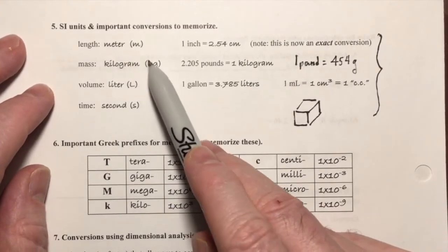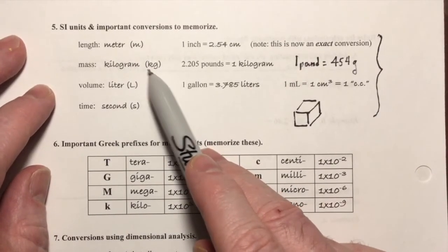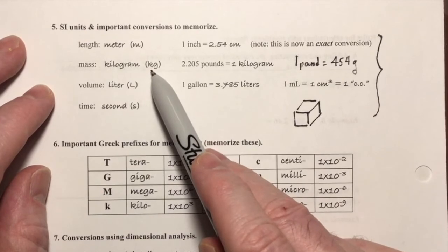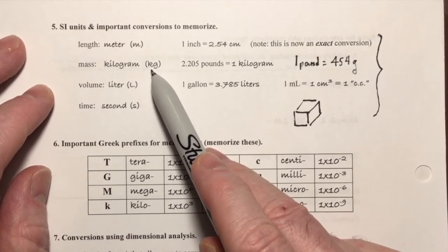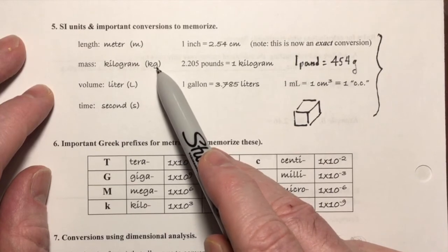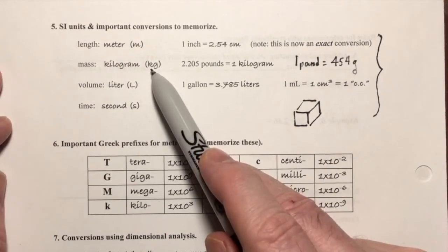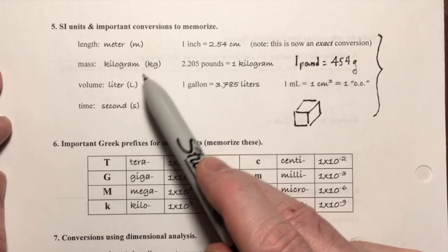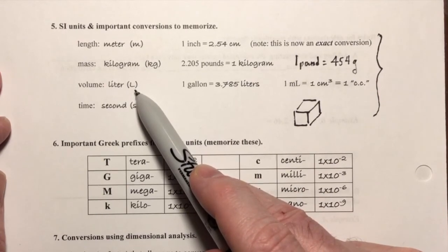I want to take a quick moment and point out there's a little bit of a quirk here in the base unit for mass. Notice that it has the kilo prefix here. The base unit for mass is not the gram, it is the kilogram. The k is a lowercase k, but L for liter is capitalized.